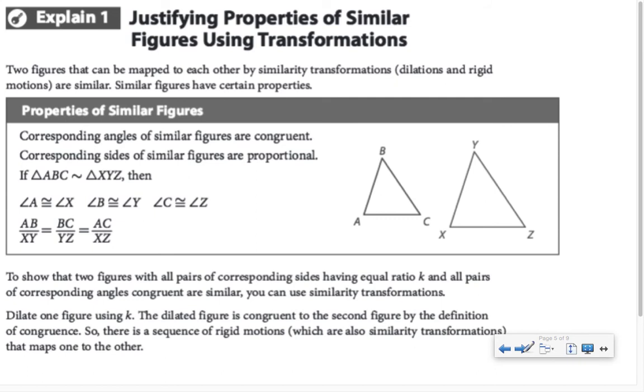Two figures that can be mapped to each other by using similarity transformations, dilations and rigid motions, that makes them similar. Similar figures have the properties listed below. Just like when we talked about how the order was very important when we're saying that figures are congruent, same thing here. When we're making a similarity statement, we're doing so in a very specific order. Angle A is congruent to angle X, first letter equal to first letter, angle B is congruent to Y, second letter congruent to second letter, and so on.